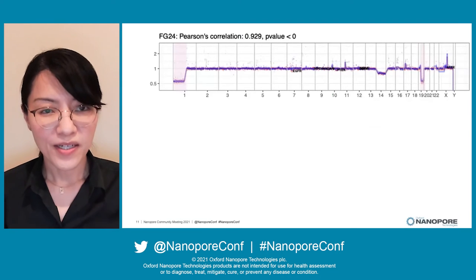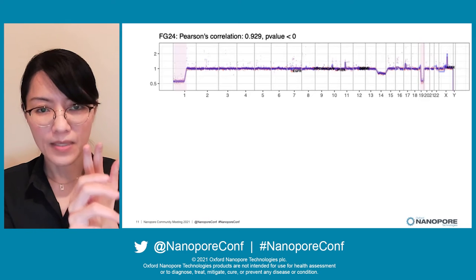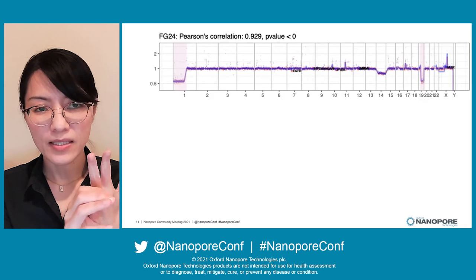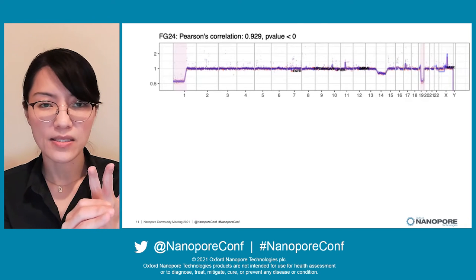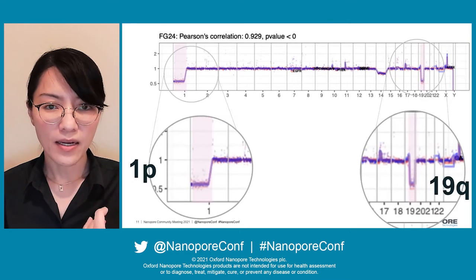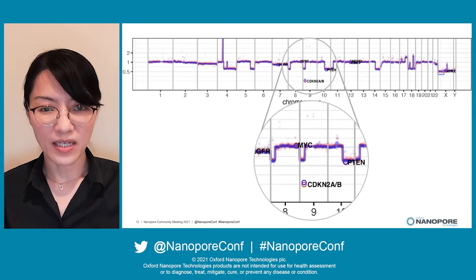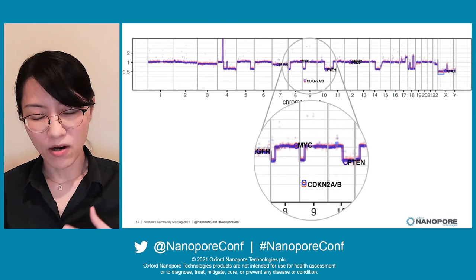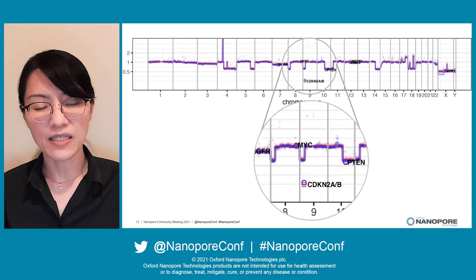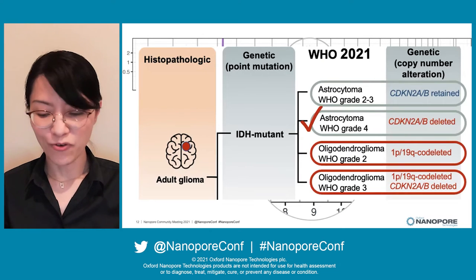Here are the results. The purple color shows nanopore NCNV and the other shows Illumina whole genome sequencing. The Pearson correlation is very high at 0.929, and both methods detect deletion of 1p and 19q — we classify this sample as oligodendroglioma WHO grade 2. In another clinical sample, both Illumina and nanopore show similar results with CDKN2AB deletion but no 1p and 19q deletion, and we classify that sample as astrocytoma WHO grade 4.